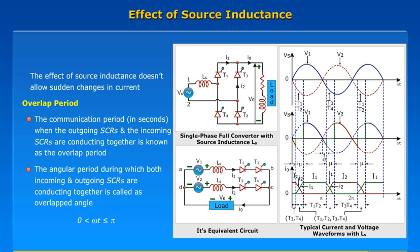The angular period during which both incoming and outgoing SCRs are conducting together is called the overlap angle, where 0 is less than omega t, which is less than or equal to pi.